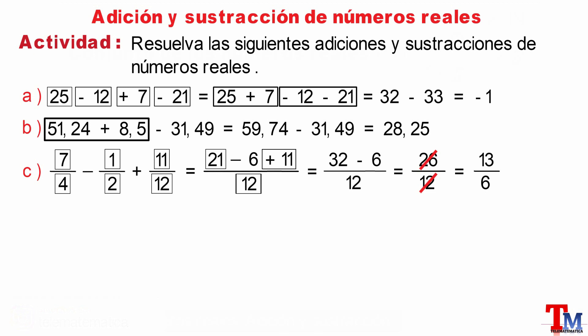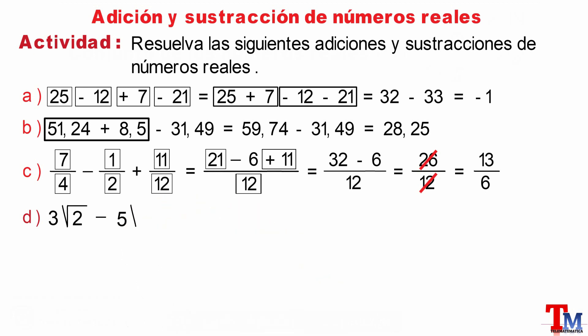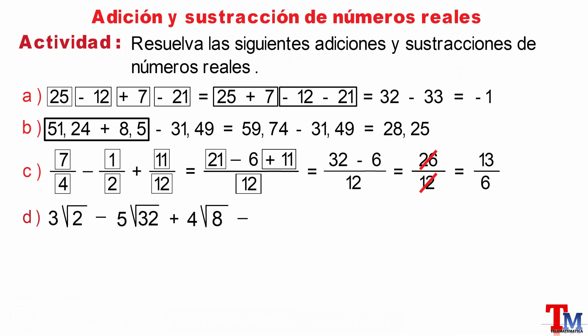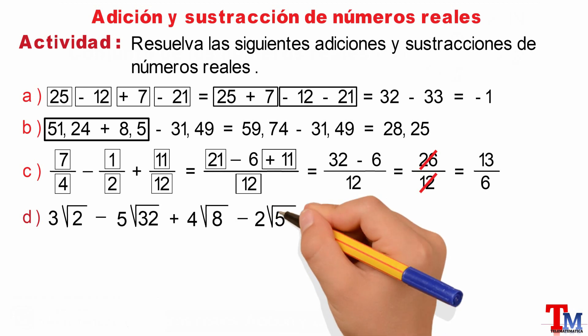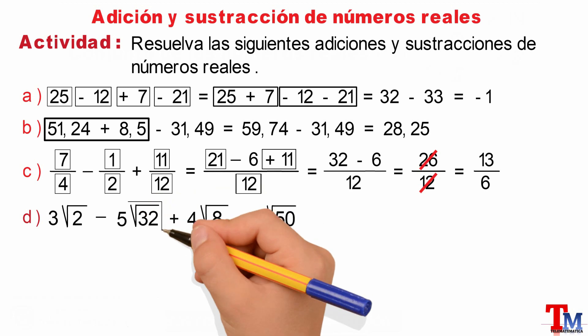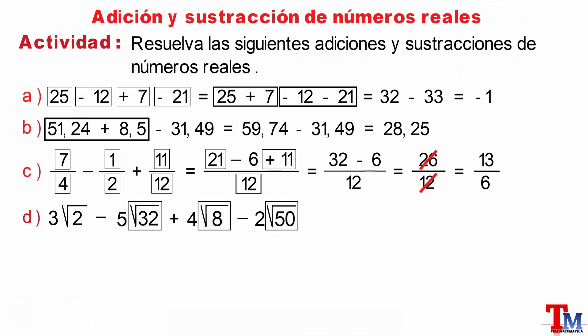Literal D: 3 square root of 2, minus 5 square root of 32, plus 4 square root of 8, minus 2 square root of 50. In this case, we have the addition and subtraction of irrational numbers. We will start simplifying the square root of 32, the square root of 8, and the square root of 50. We will not explain that procedure in this video, but a link in the description explains how to simplify, reduce, or transform a radical number.